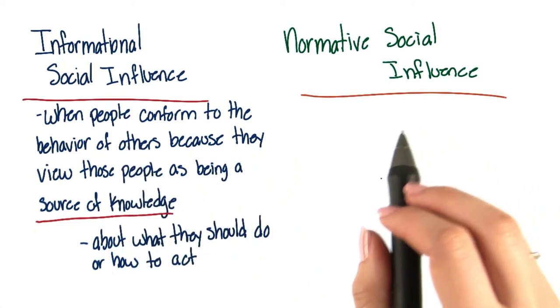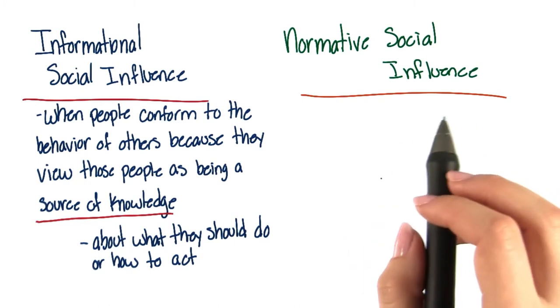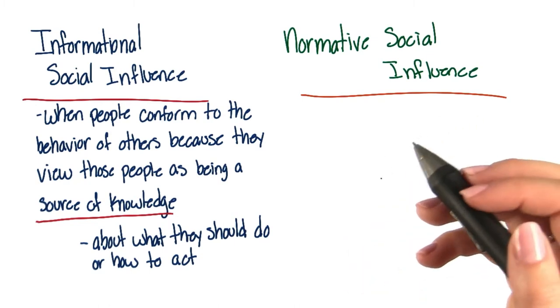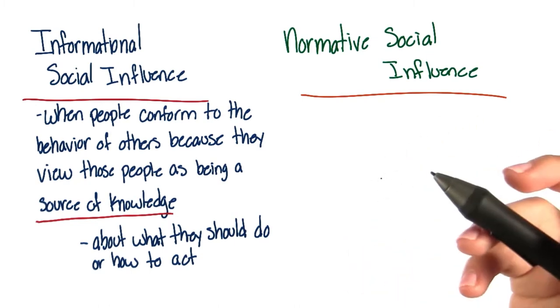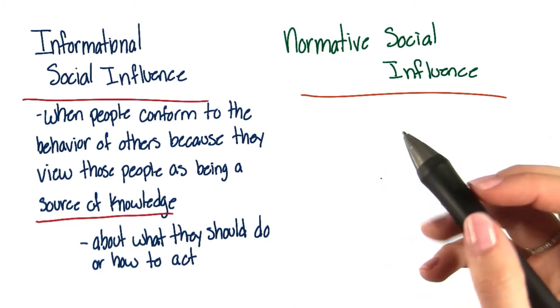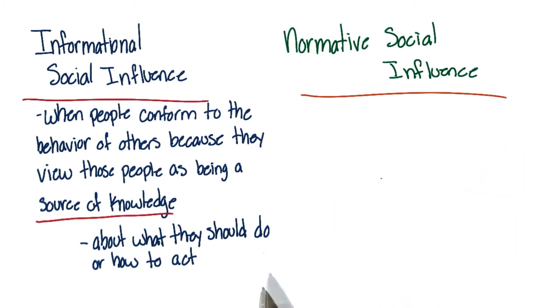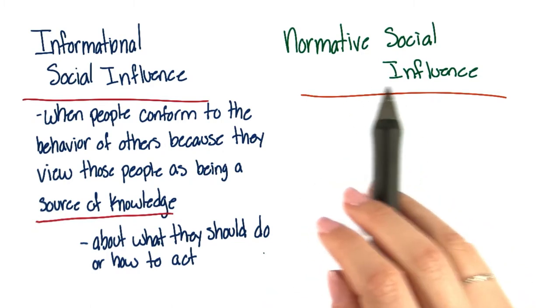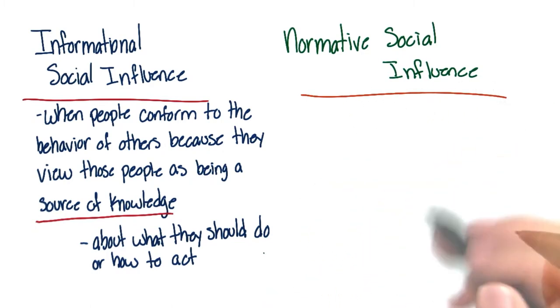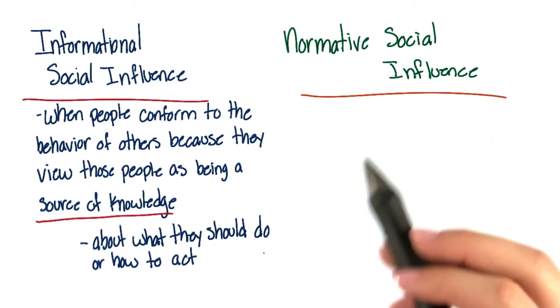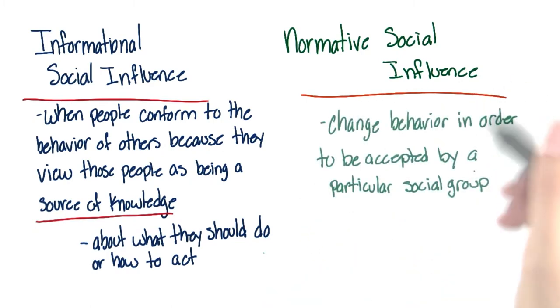The next influence on our behavior will be quite obvious when you stop and think about some examples in your own life. This is normative social influence, and it explains a lot of our behavior.